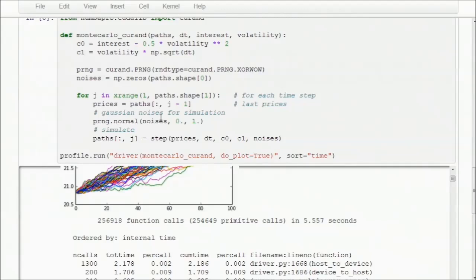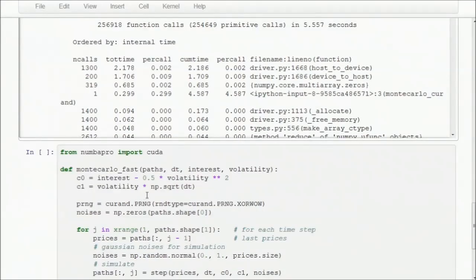To fix this, we're going to use the CUDA Runtime library to manage the data movement ourselves. Now one caveat I have to point out here is that once we start managing data movement, we have to handle all the data movement for the vectorized step function to work. So in addition to optimizing the noises data movement, we will handle the prices array movement as well. Since we'll be using the CUDA Runtime library, we need to include it from Numba Pro first.